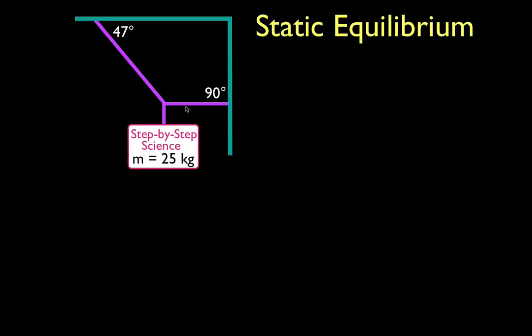It is supported by this cable and this cable, and we would like to figure out what is the force of tension T1 in this cable, which makes an angle of 47 degrees with the roof, and the force of tension in the other cable, which makes an angle of 90 degrees with the wall.